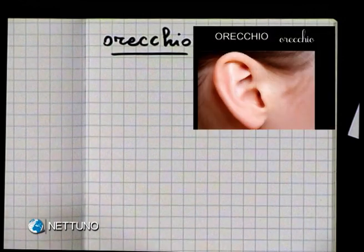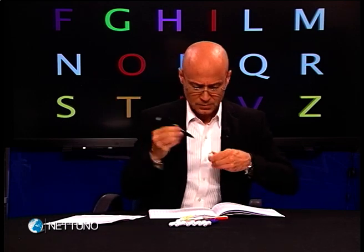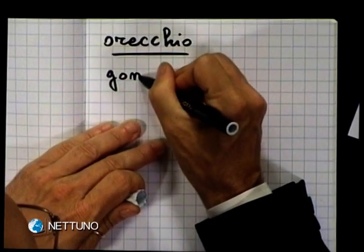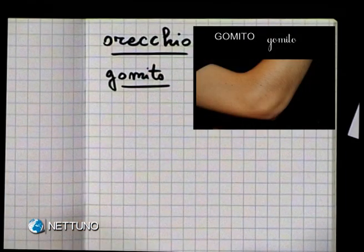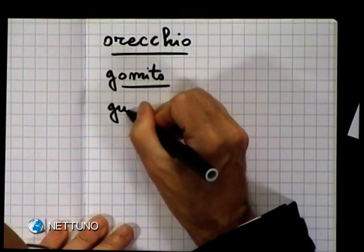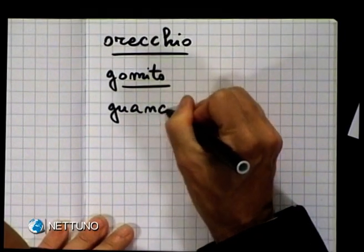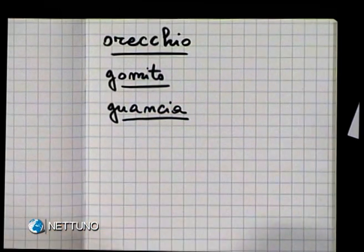Orecchio. E questo cos'è? Questo è un gomito. Scriviamo la parola gomito. E questa? Questa è una guancia. È la mia guancia. Scriviamo anche la parola guancia.